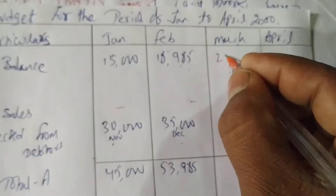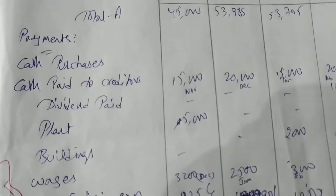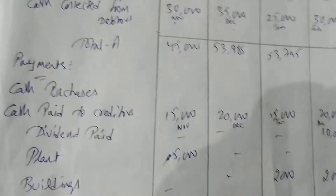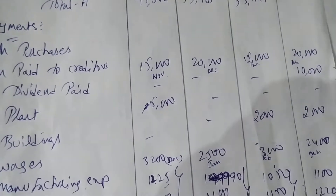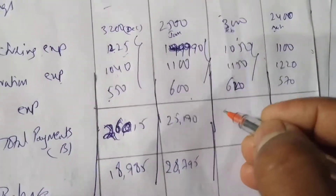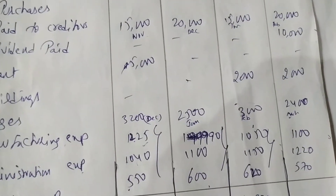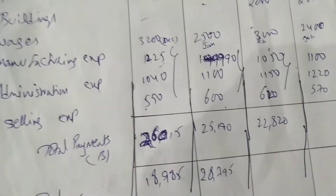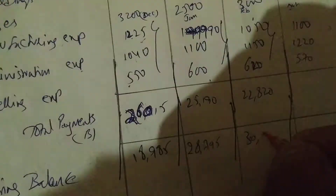March: opening balance 28,795 plus receipts 25,000 gives 53,795. Payments: creditors 15,000; building installment 2,000; wages 3,000; manufacturing 1,050; administration 1,150; selling 620 — total 22,820. Closing balance: 53,795 minus 22,820 equals 30,975.